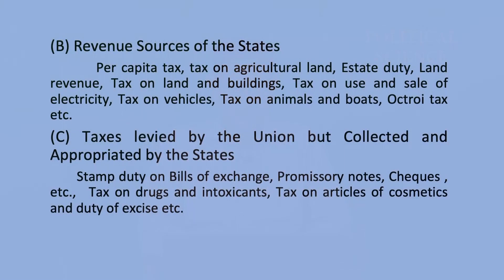We have to study separately the financial resources of the union government and state governments. The taxes levied by the central government are those subjects mentioned in the union list. The revenue sources of the states include per capita tax, tax on agricultural land, estate duty, land revenue, tax on land and buildings, tax on use and sale of electricity, tax on vehicles, tax on animals and boats, octroi tax, etc. These are the tax subjects of the state governments.